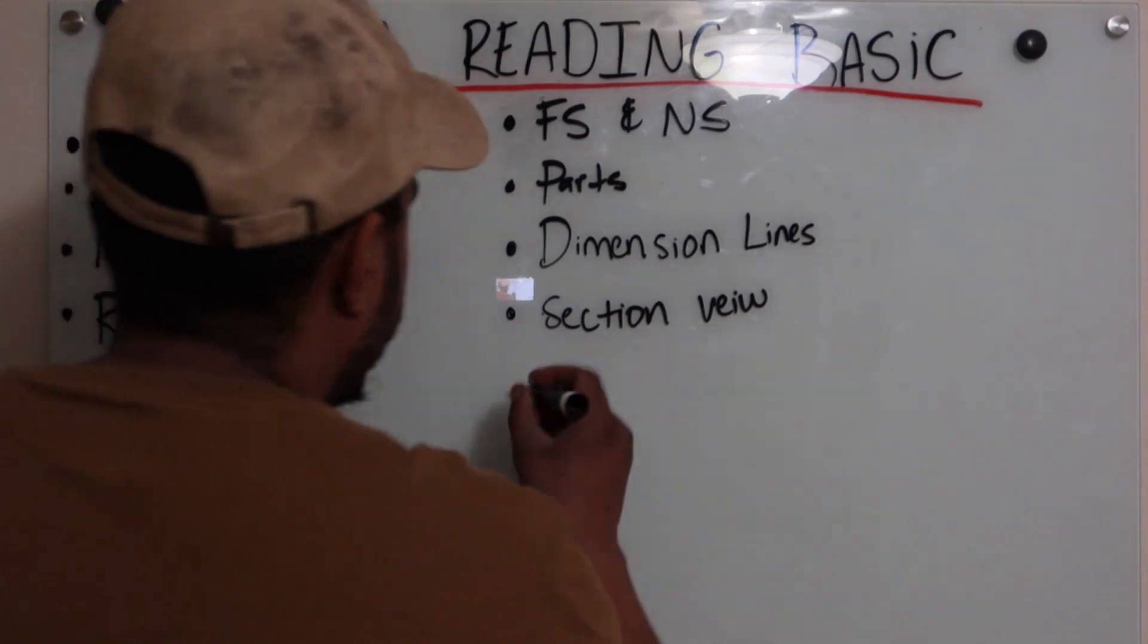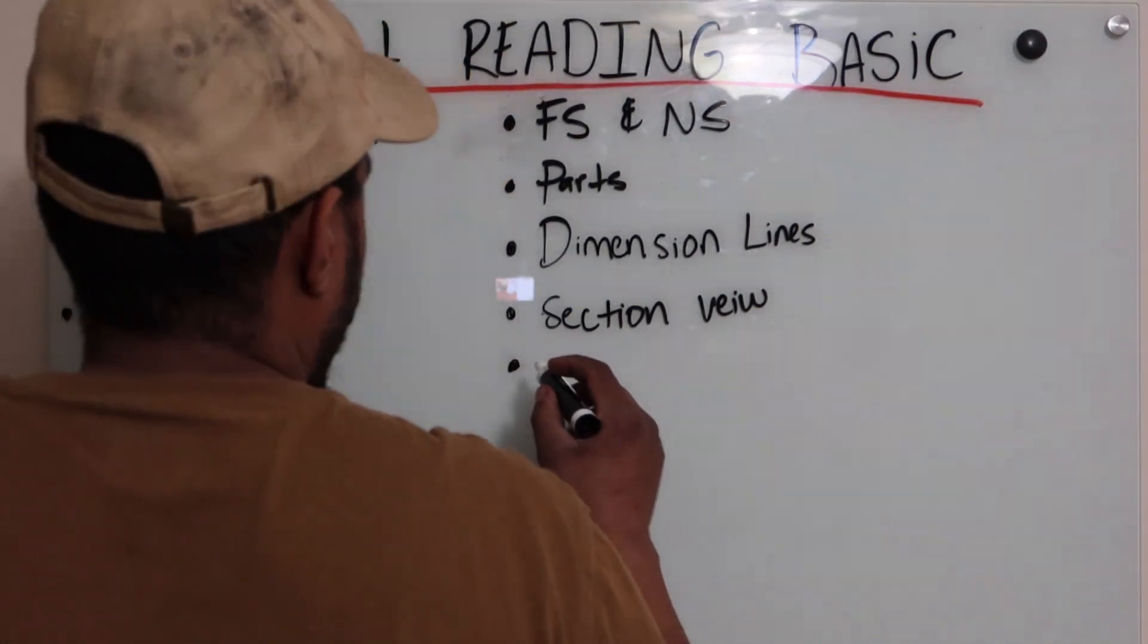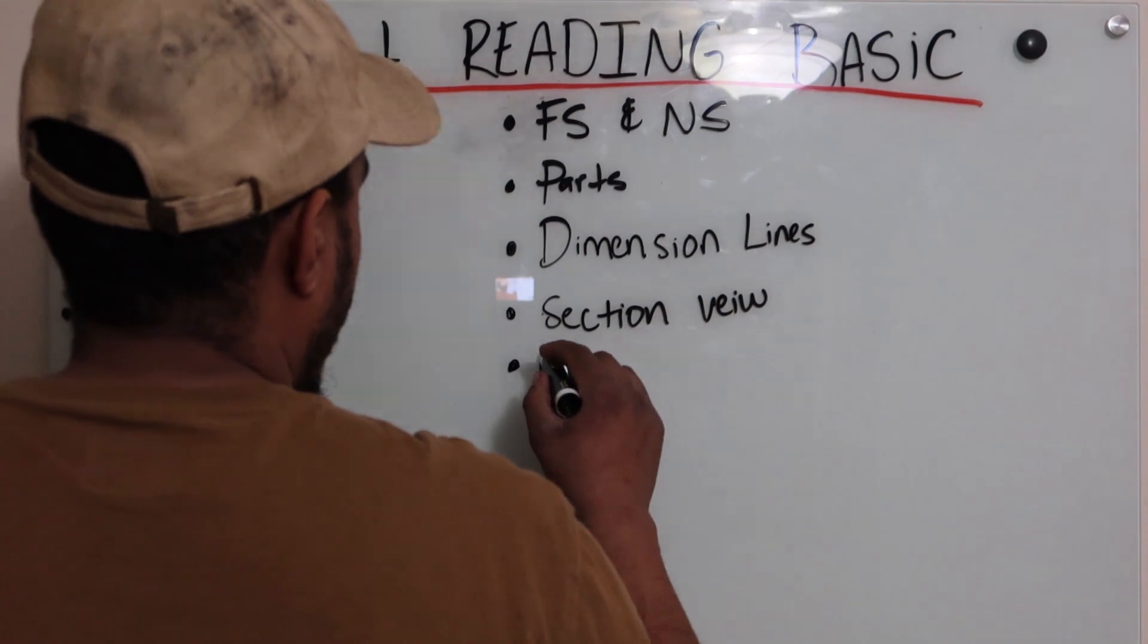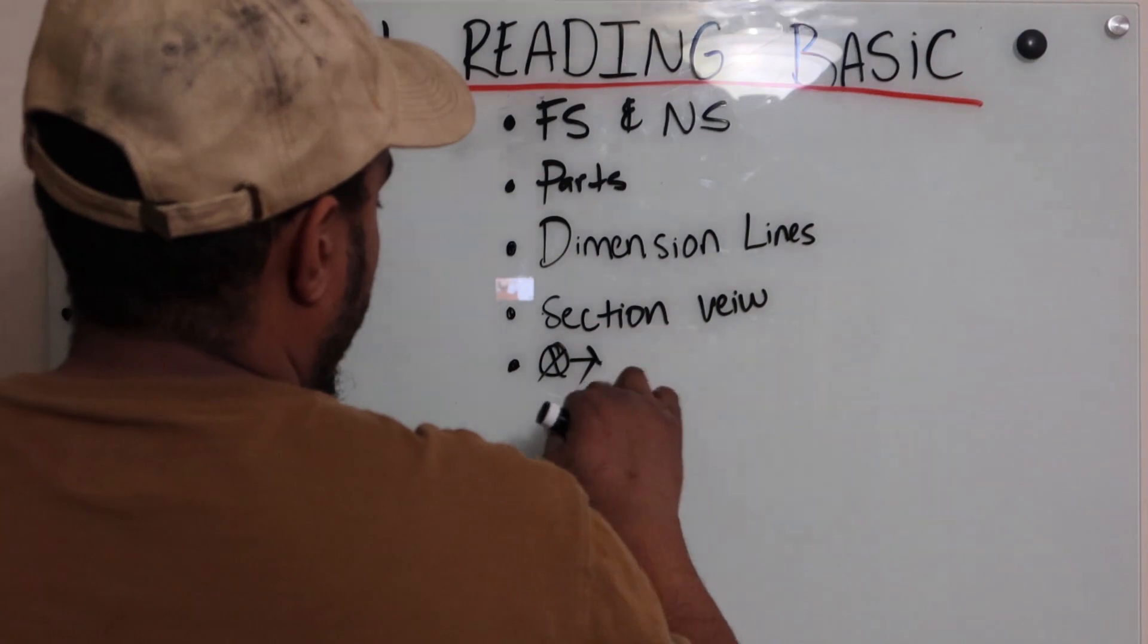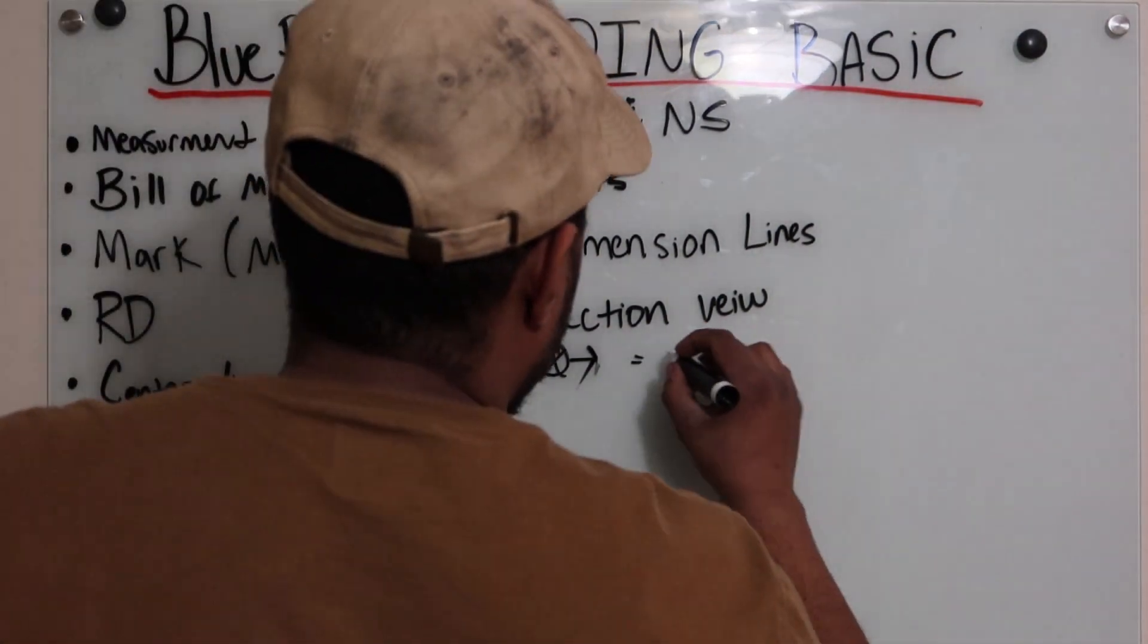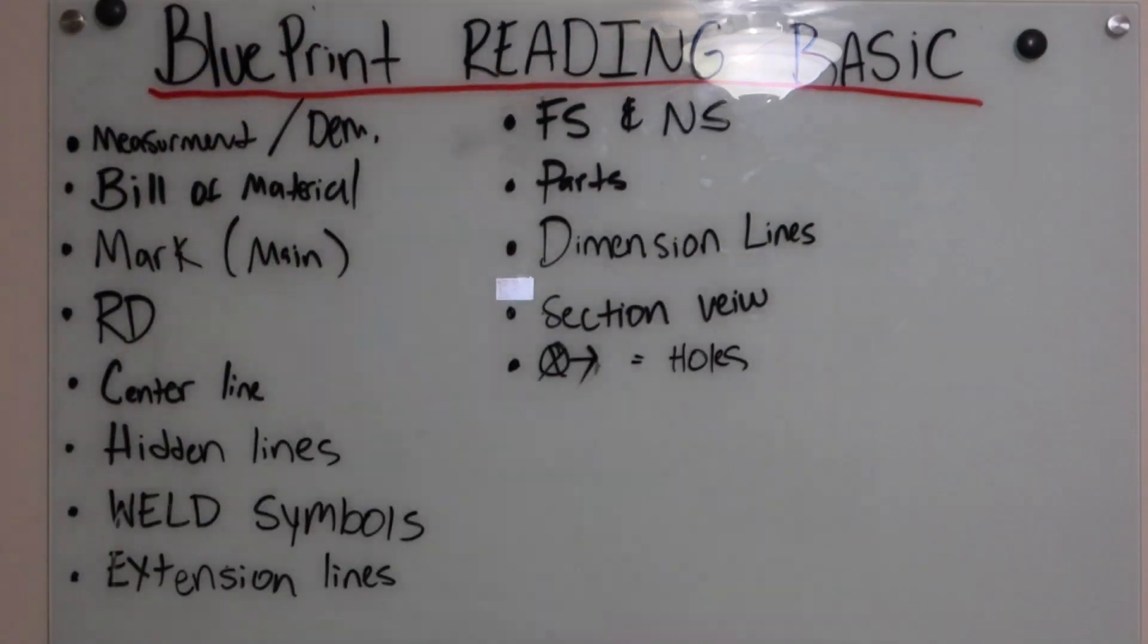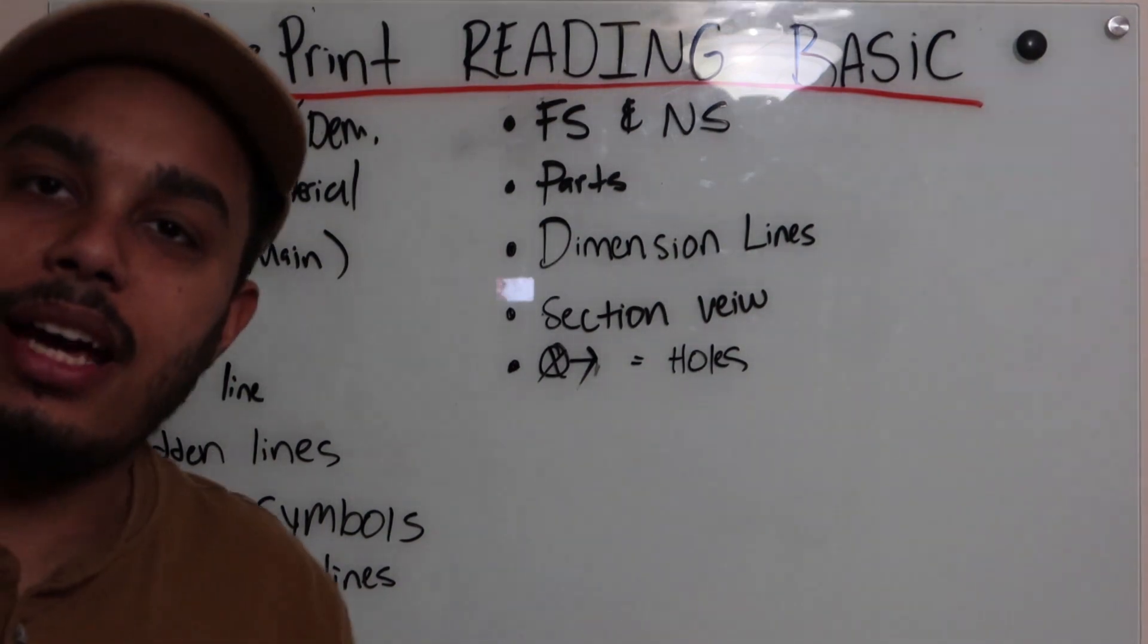Oh my bag, one more thing. If you see this, I think it's something like this and it has like an arrow point to it, that means that it's a hole. That means hole. Let you guys write that down if you need to write it down.